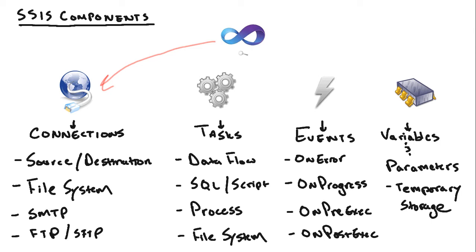Then we have tasks — tasks are the heart and soul of SSIS, these are really our workflow components. We have things like data flow tasks, which is the big task you'll be working with if you're moving, scrubbing, or transforming data. There are many tasks inside it to move data, merge data, transform data, convert data, sort data — the list goes on. We also have SQL tasks if we want to run a SQL statement against a database, such as a stored procedure or a basic query.